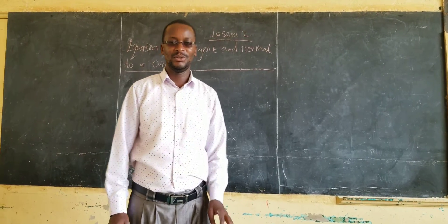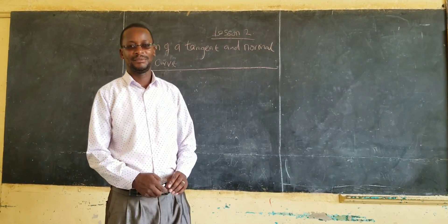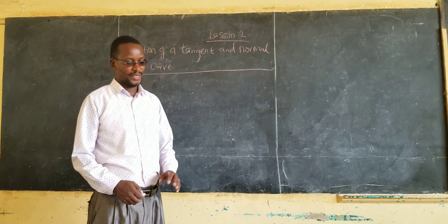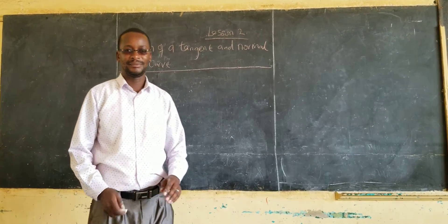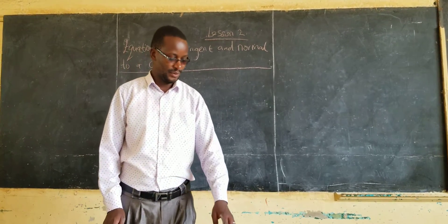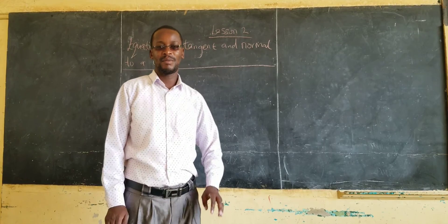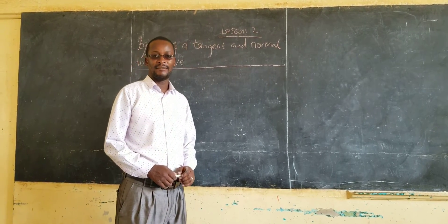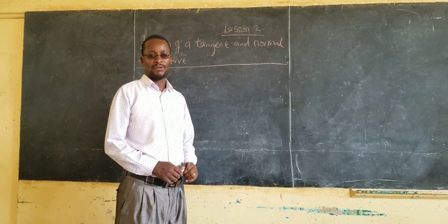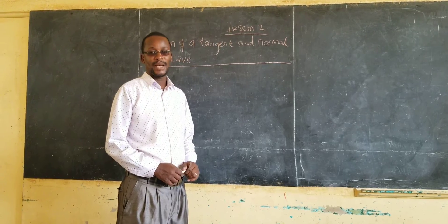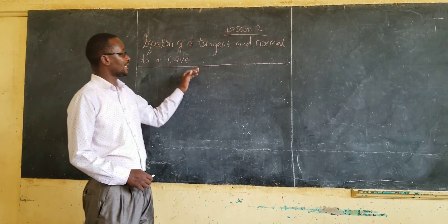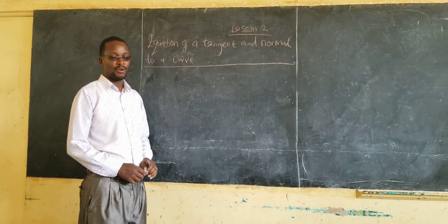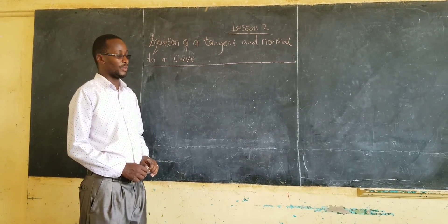Welcome to lesson 2, differentiation. Last time we went through the rules of differentiation — the three rules. I hope you remember them, and I hope you remember how to differentiate or get the derivative of a polynomial. Today, we are going to look at how you get the equation of the tangent and the normal to a curve.